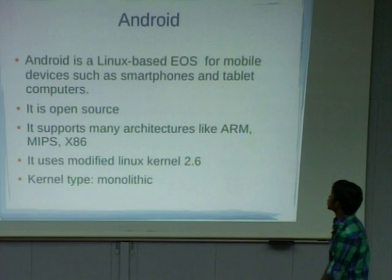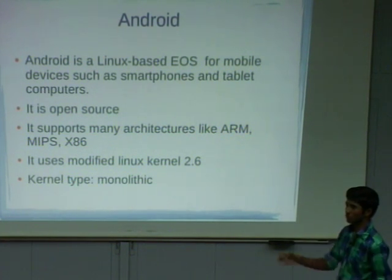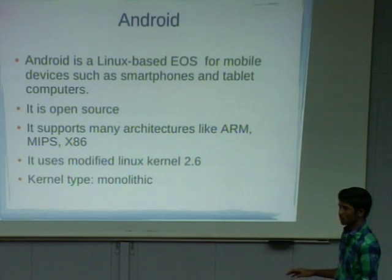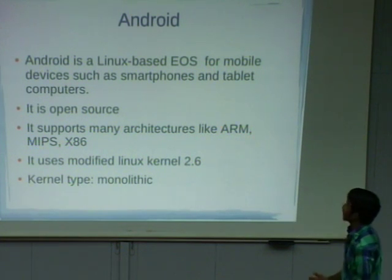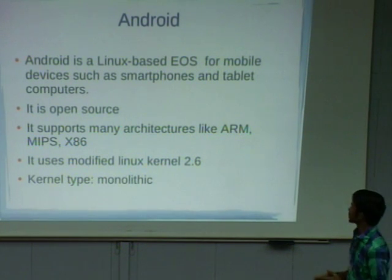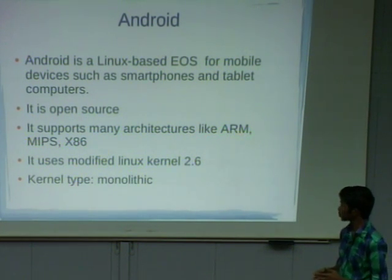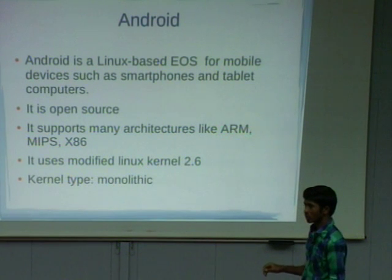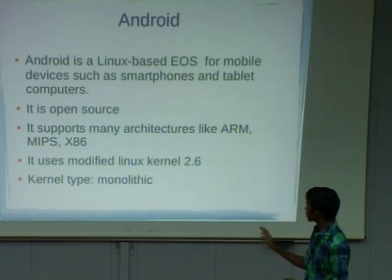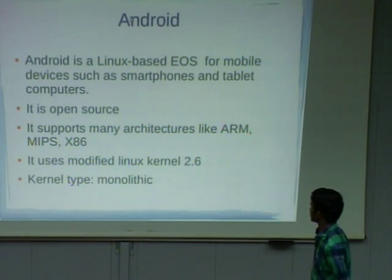Now coming to Android. Android is a Linux-based embedded operating system, internally using Linux kernel 2.6 with some modifications — it is not using the original Linux kernel 2.6. It is open source. Android supports different architectures like ARM, MIPS, and x86. Coming to the kernel type, Android is a monolithic kernel. There are two types of kernels: microkernel and monolithic. Monolithic is a full-fledged kernel that consumes more power and occupies more space in RAM compared to a microkernel.